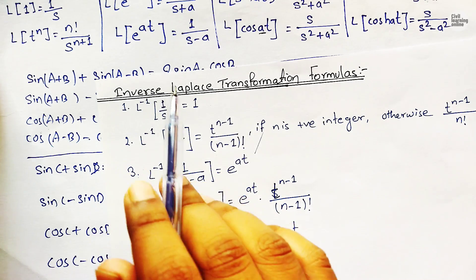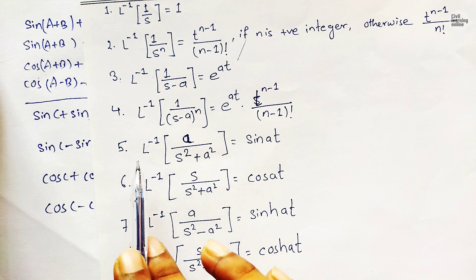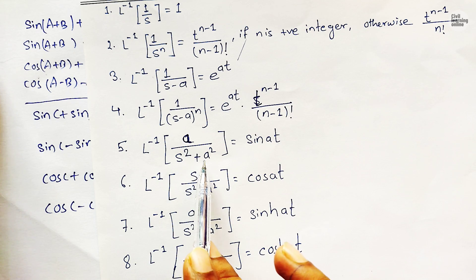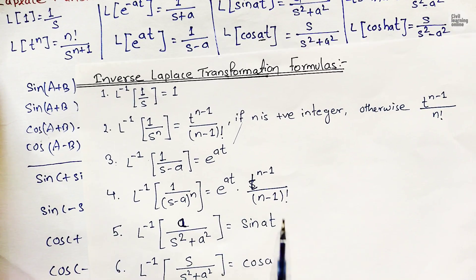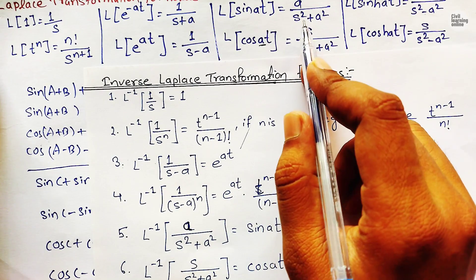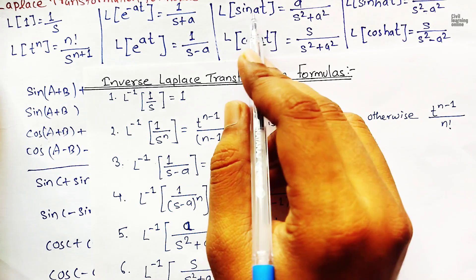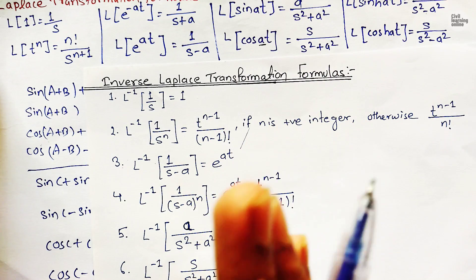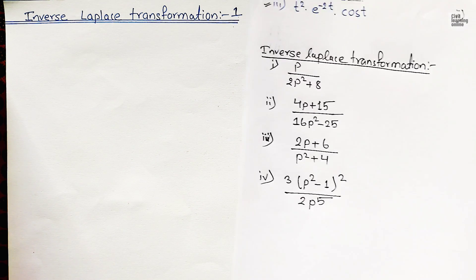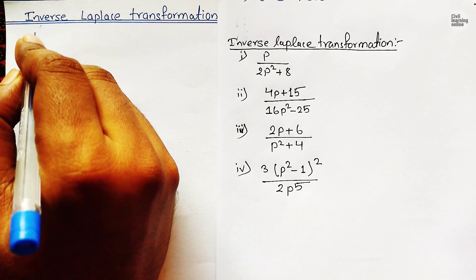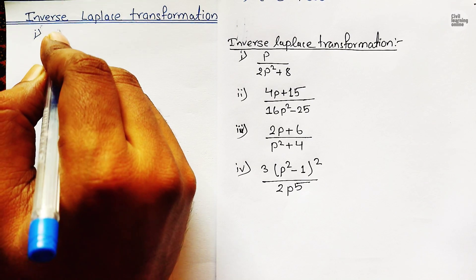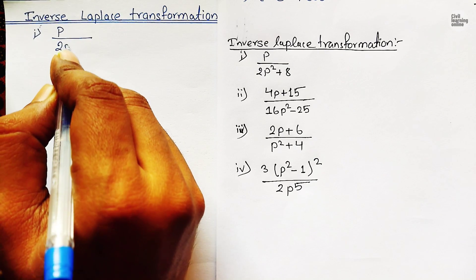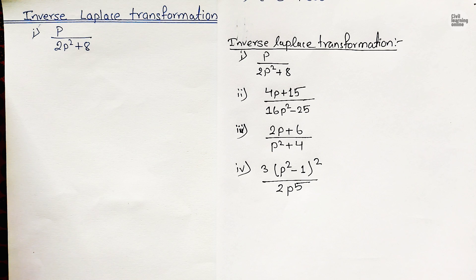Inverse Laplace transformation of a/(s²+a²) is simply sine(at). These formulas are exactly the opposite — we now work from the s-domain back to the time domain. Our first numerical problem is: find the inverse Laplace transformation of p/(2p²+8).